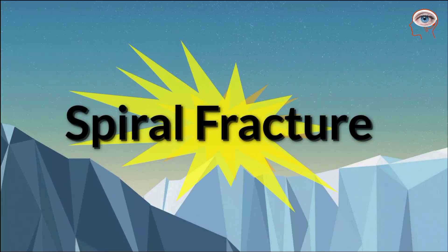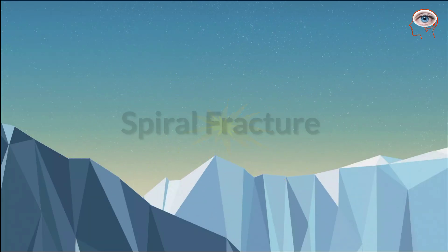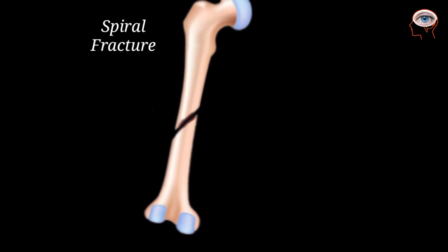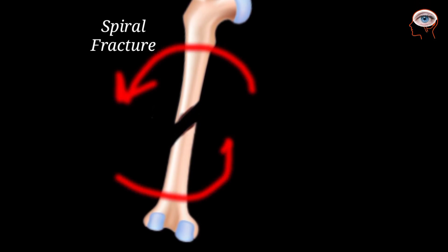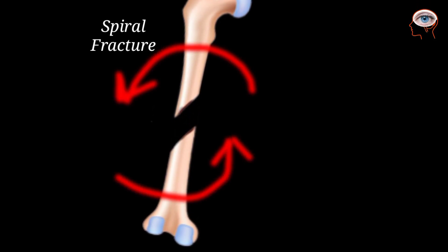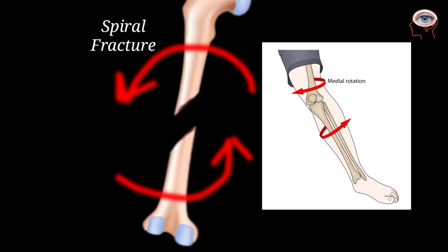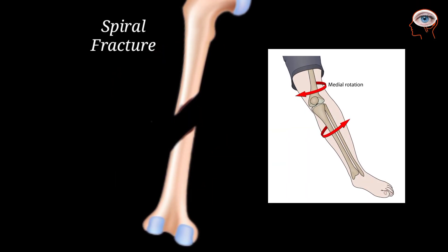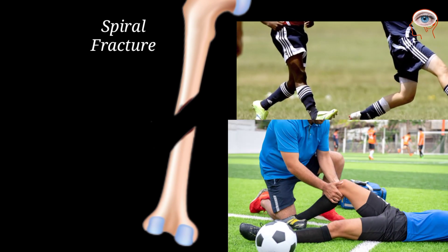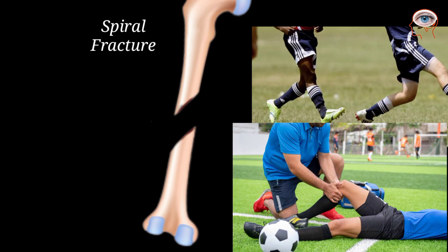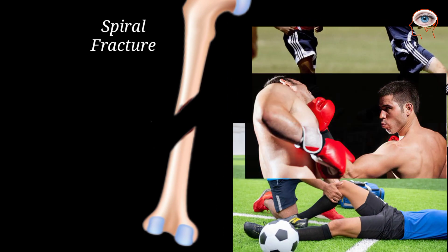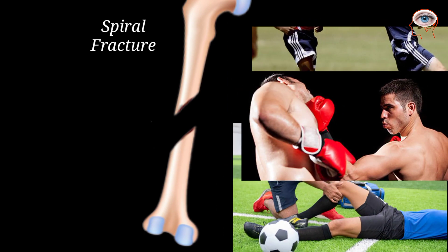Spiral fractures: this fracture spirals around the bone. They occur in the long bones of the body and are caused by twisting injuries, like those that happen during sports or by physical attacks.